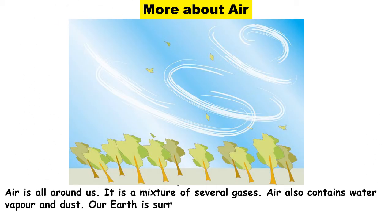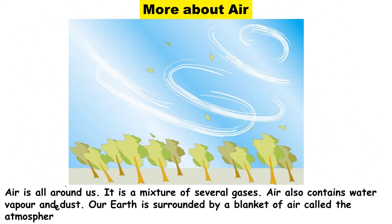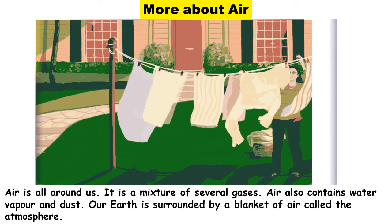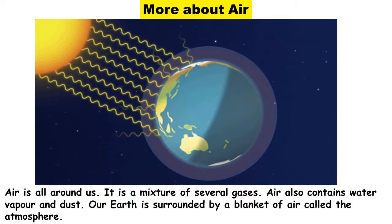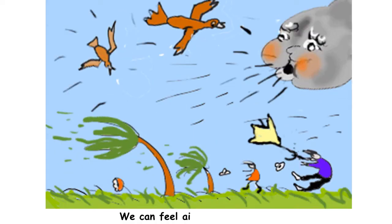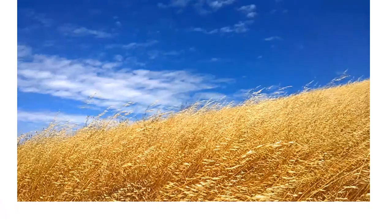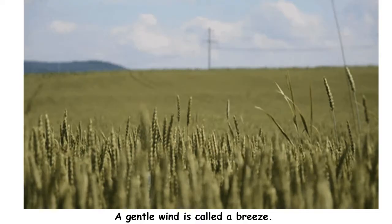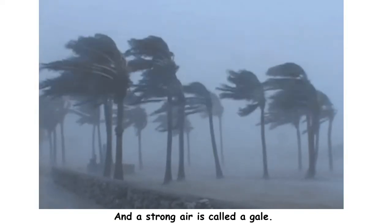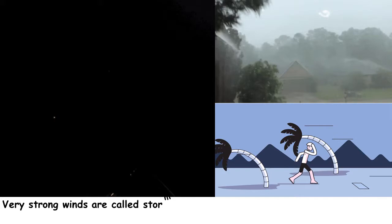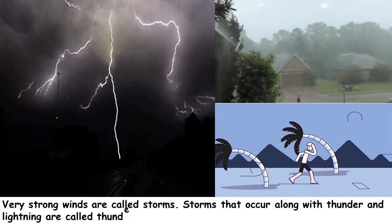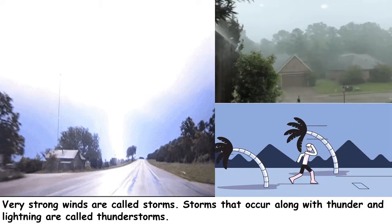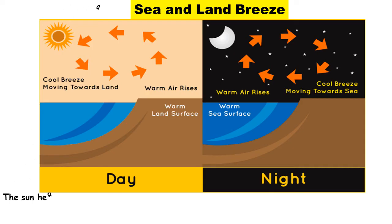Air is all around us. It is a mixture of several gases and also contains water vapor and dust. Our Earth is surrounded by a blanket of air called the atmosphere. We can feel air when it blows — moving air is called wind. A gentle wind is called a breeze, and a strong wind is called a gale. Very strong winds are called storms. Storms that occur along with thunder and lightning are called thunderstorms.